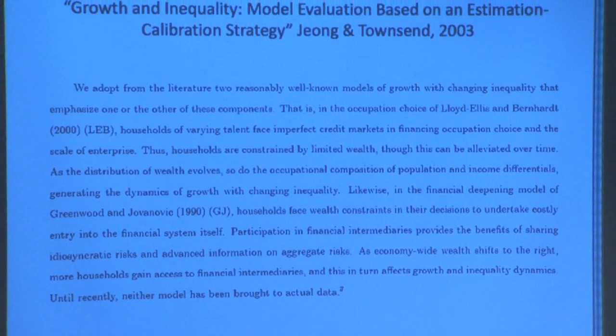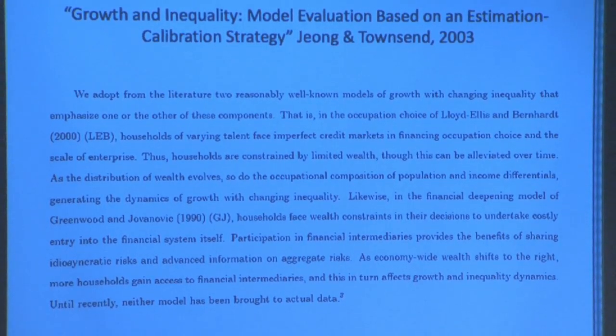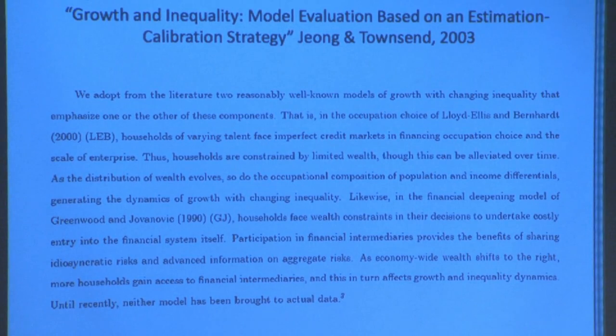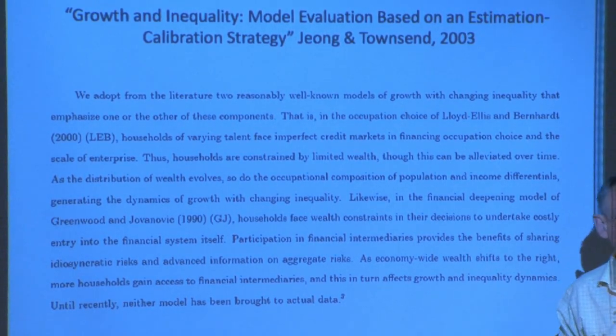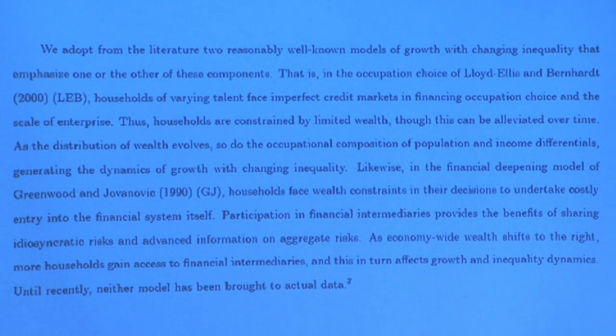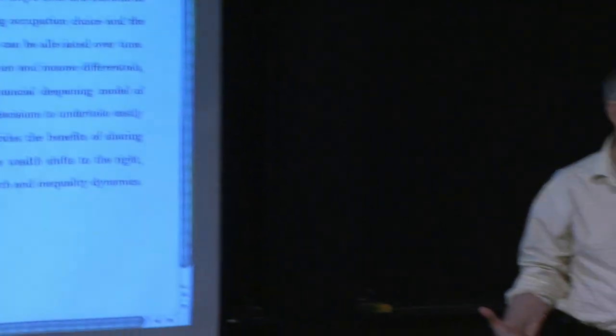We're going to do two papers from the literature. One is Lloyd-Ellis and Bernhardt, and the other is Greenwood and Jovanovich. Each tells a plausible story about what lies behind the growth process and the relationship between growth, inequality, financial deepening, and related variables. We're going to try to estimate those models. The negative part is we learned how to do statistics and econometrics partly through the lens of these models, by realizing how problematic certain parts are.